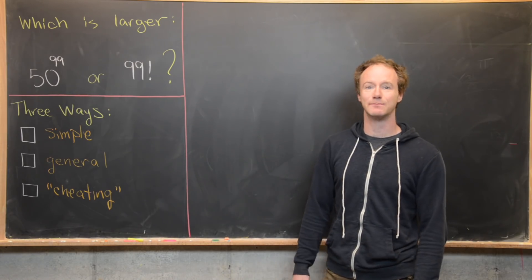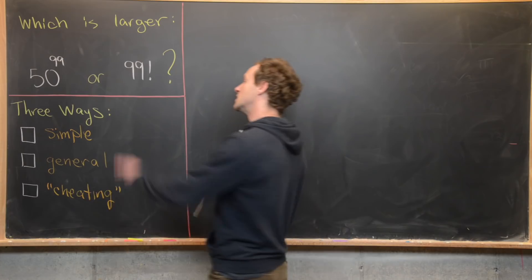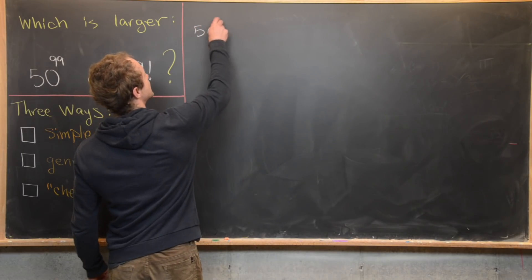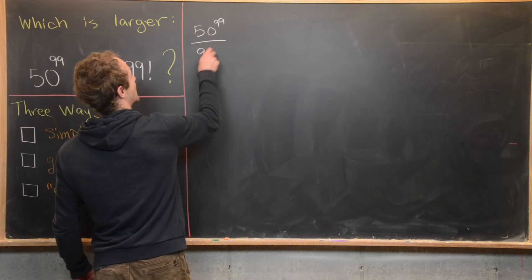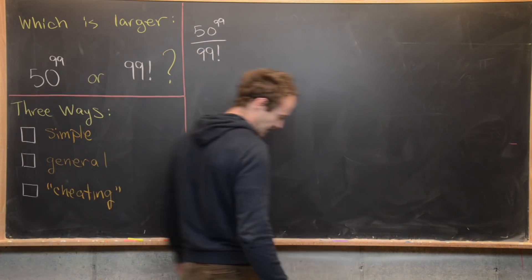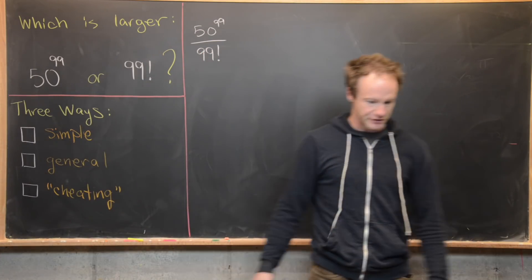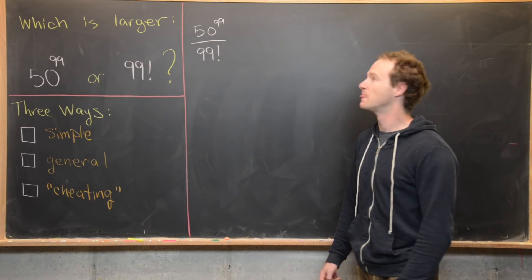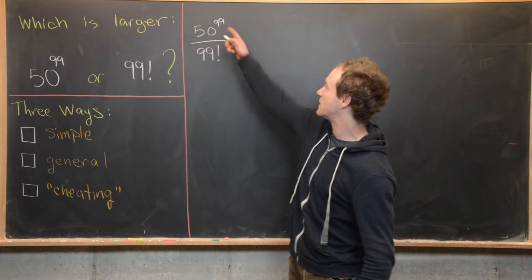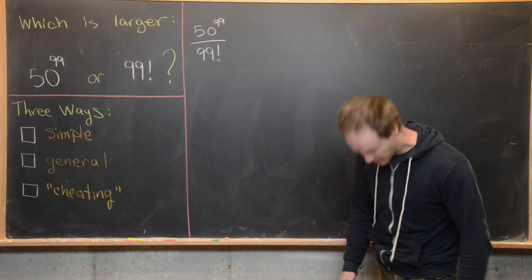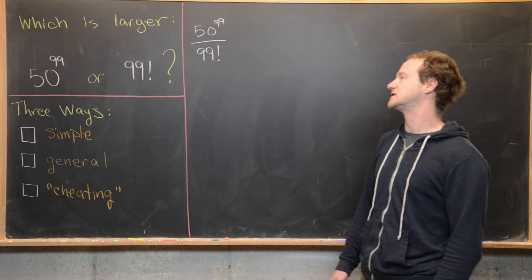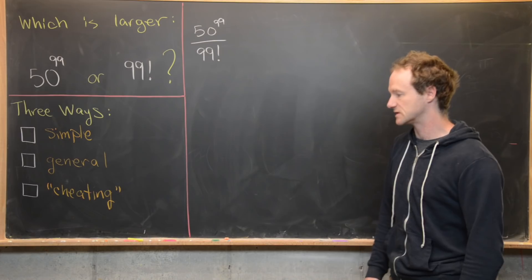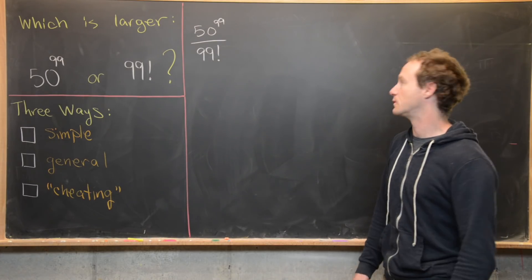So let's get to the simple calculation first. I'm going to look at the quotient 50 to the 99 divided by 99 factorial. If I can reduce this to something which is clearly larger than one, then I know that the numerator is larger. But if I reduce it to something clearly smaller than one, then that means the denominator is larger. So let's see which one we get.